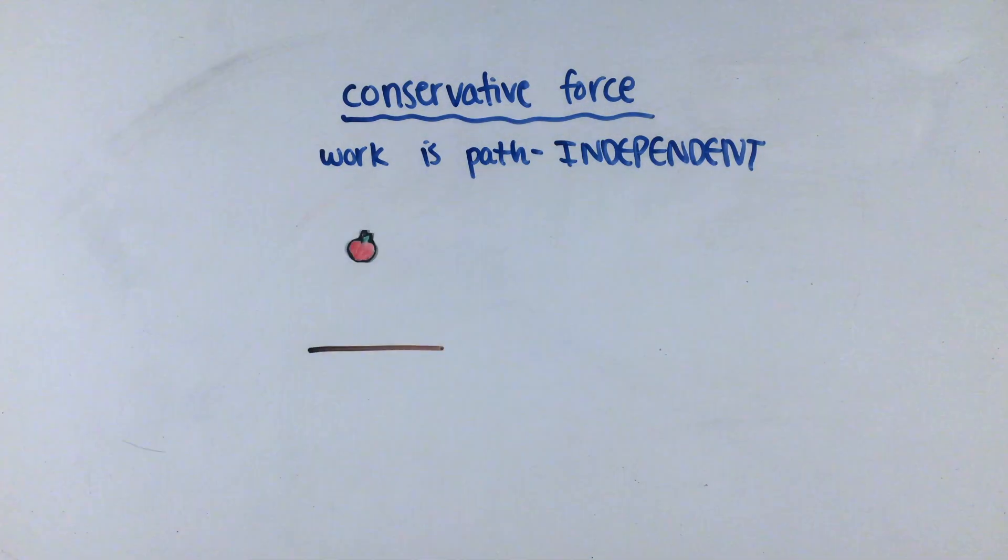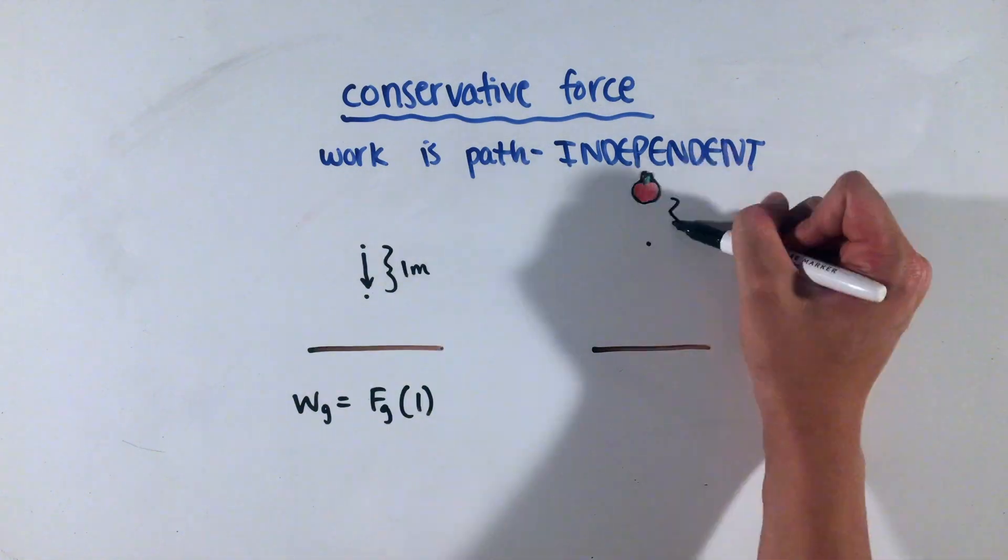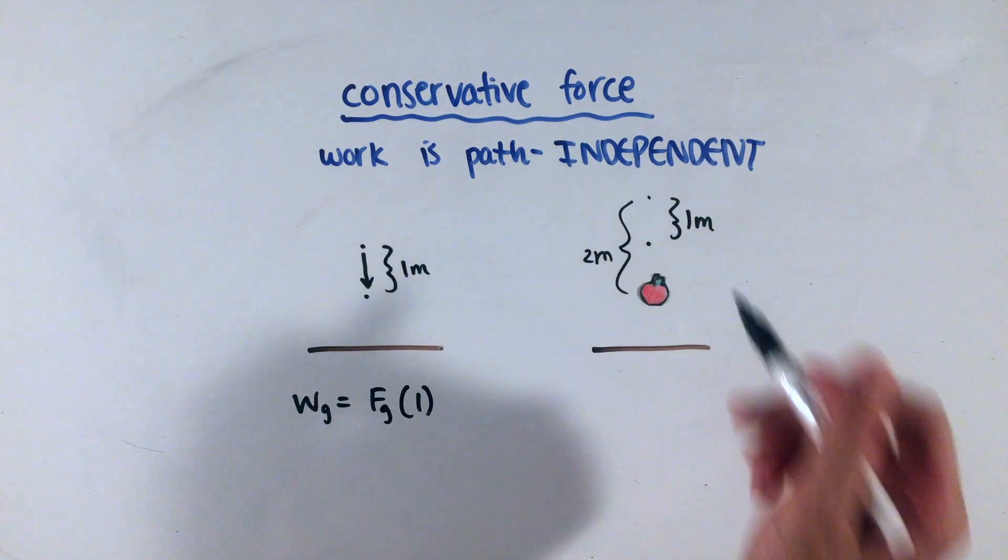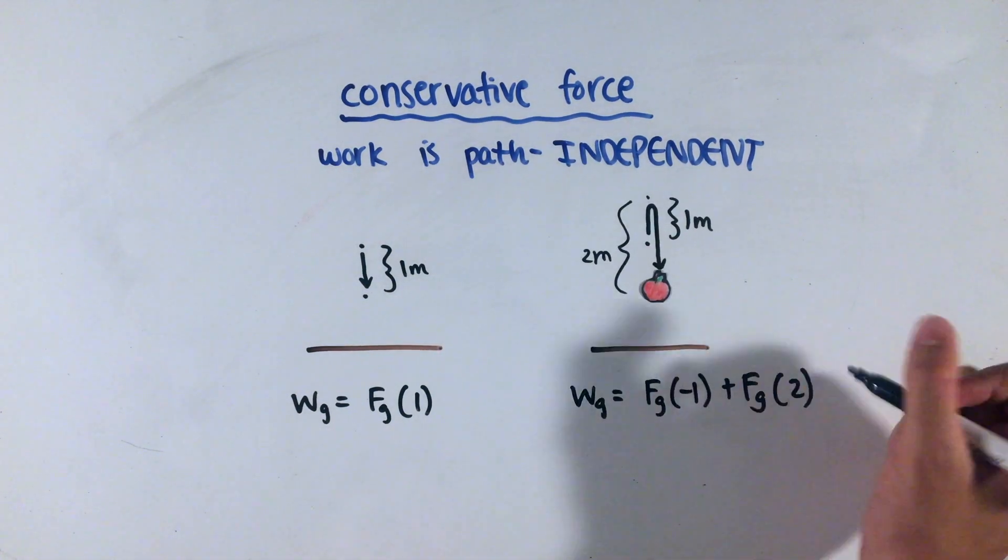For example, the force of gravity on this apple is conservative, because the work done on the apple that falls one meter straight down, versus one that flies one meter up, then down two meters, or any path for that matter, is still the same.